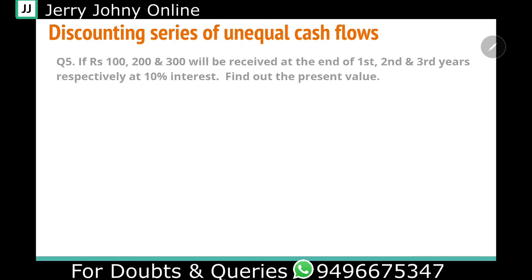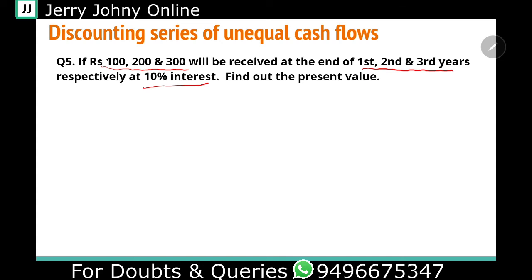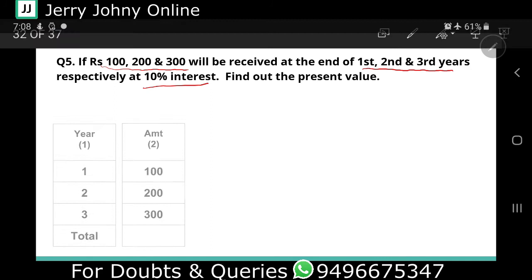So this is the time that we have to work on a table value. Let's look at the problem: if rupees 100, 200, and 300 will be received at the end of the first, second, and third years respectively, assuming 10 percent interest, what is the present value?